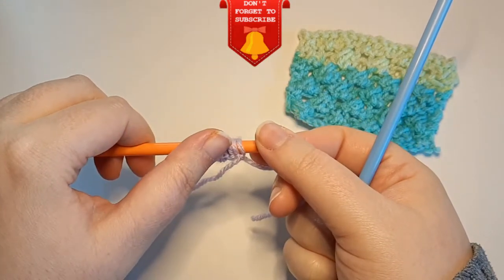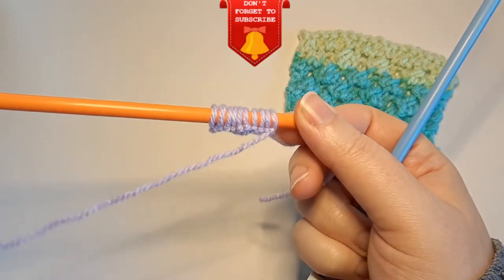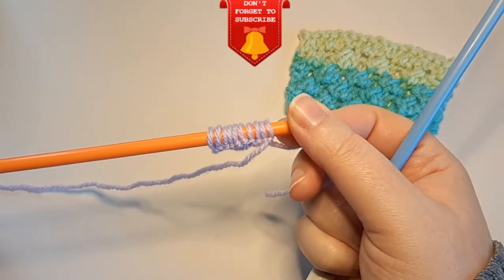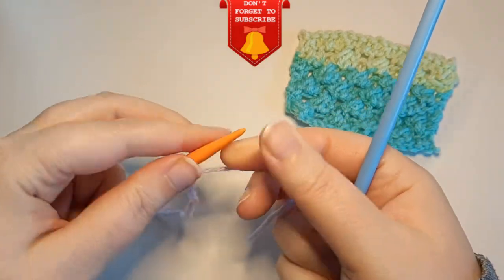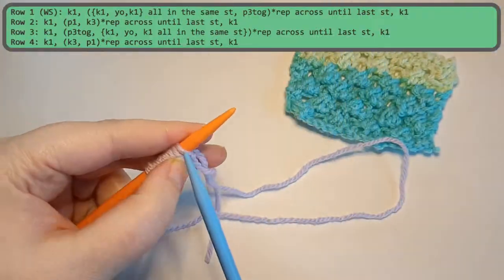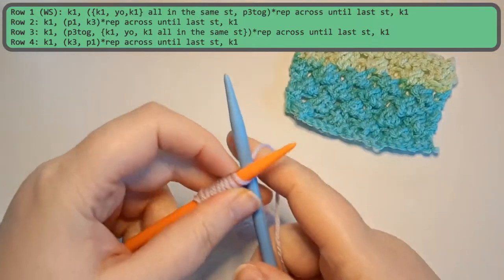So to get started you want to cast on multiples of 4 plus 2. So to get started row 1 is actually the wrong side.